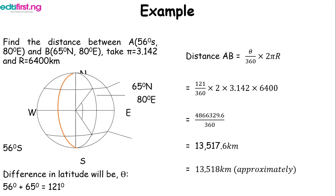The intersections between latitude and longitude are connected towards the center because this is a great circle. How do we know it is a great circle? Because the longitudes are the same and not the latitudes. Where latitudes are the same you have a small circle; where longitudes are the same you have a great circle. So theta = 56 + 65 = 121 degrees. Using the great circle formula: distance = (121 / 360) × 2 × 3.142 × 6400. Multiplying the numerator gives one value, the denominator is 360, and dividing gives approximately 13,518 km.